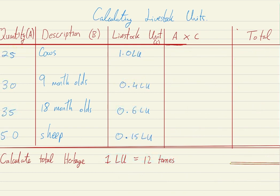Here is another example of calculating livestock units. Again we lay out our table with quantity, a description of the animal, the matching livestock unit, and then we multiply column A by column C. We have 25 cows multiplied by 1 livestock unit, which gives us 25 livestock units.